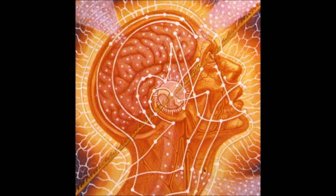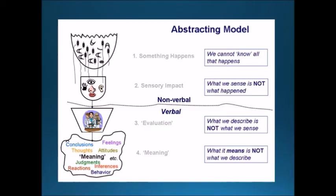First, let's talk about the idea that the map is not the territory — Korzybski's most famous saying. Language is a map; our abstractions are models of the world. We use language to map out our world, and maps are useful precisely by virtue of their limited information.